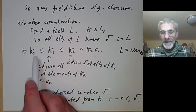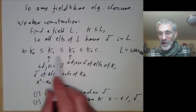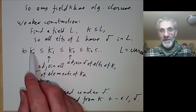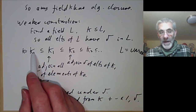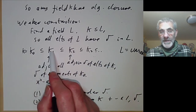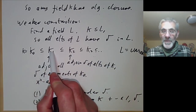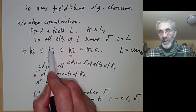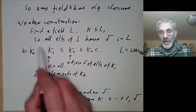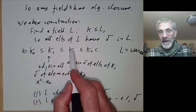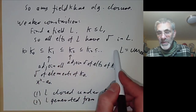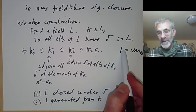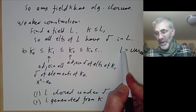This is a fairly common construction in mathematics. If you want to construct an algebraic object closed under some operation you can quite often get it by iterating a countable number of times and taking the union.